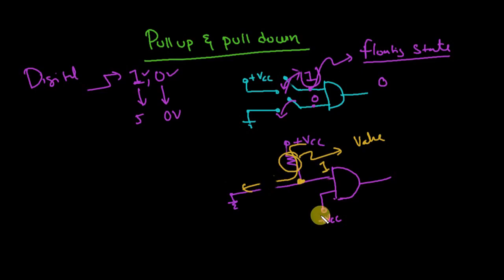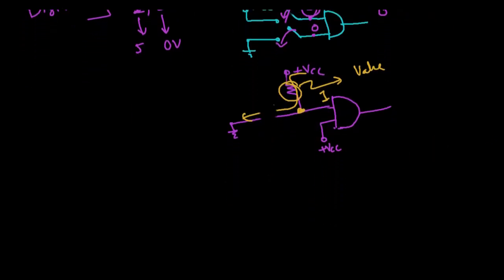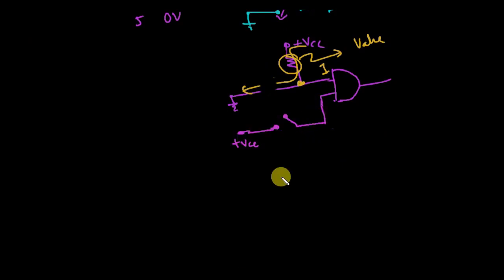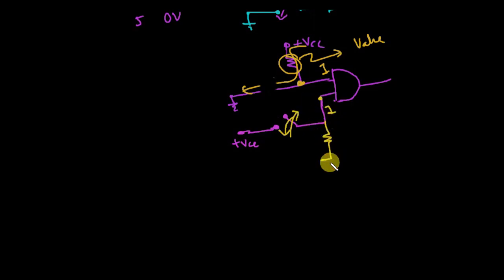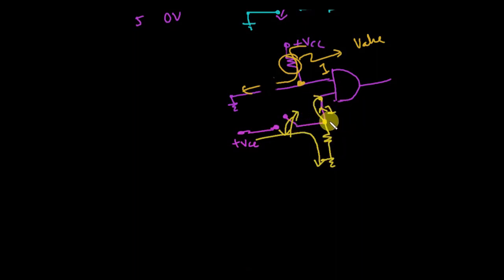For a pull-down resistor — whenever the switch is closed we get positive VCC, which means logic 1. When the switch is open, it is in a floating condition. To avoid this, I put a resistor connected to ground. When the switch is closed, current flows from VCC and is limited by the resistor; when the switch is open, the input is connected to ground, giving logic 0.